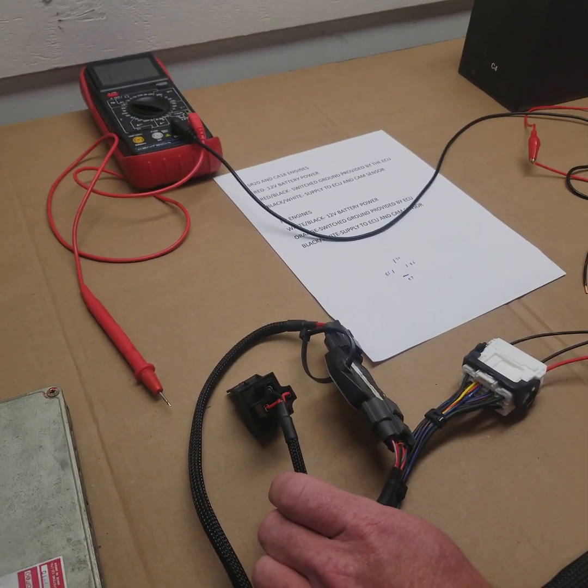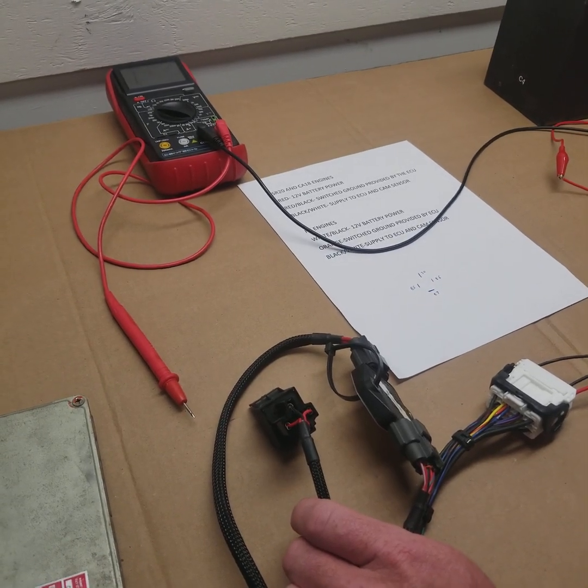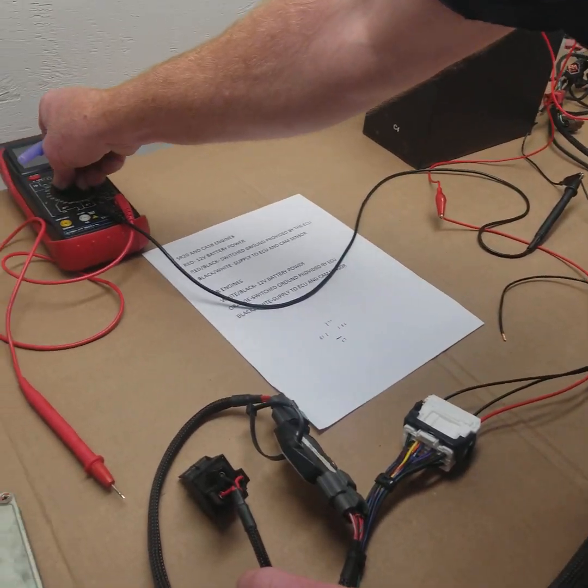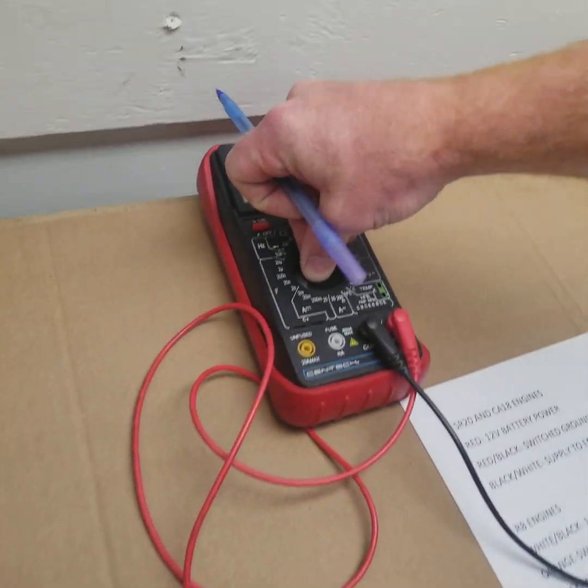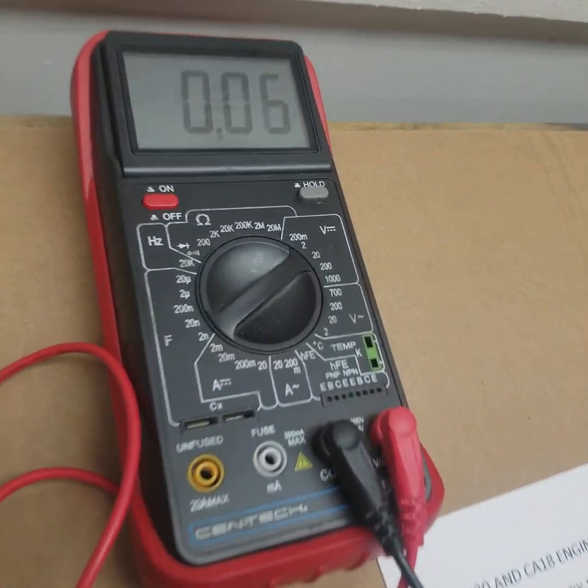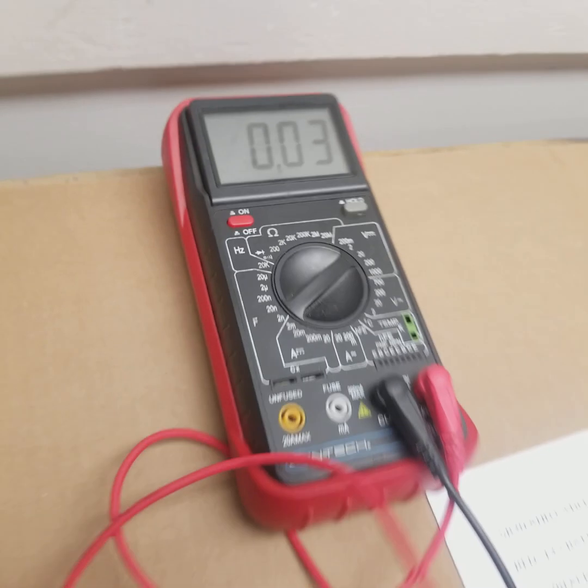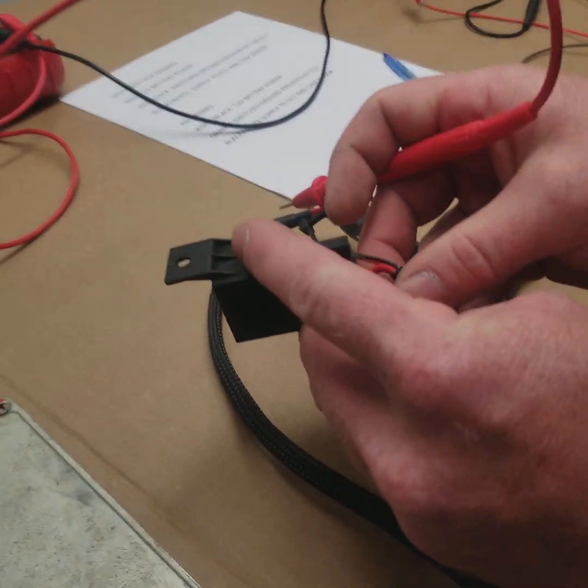Now we're going to go over how to test it. I've got our multimeter grounded over here. We're going to go to a DC voltage setting and we're going to show you guys what's going on.